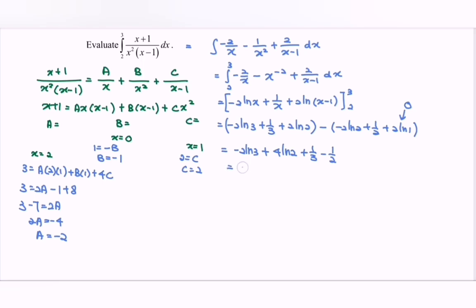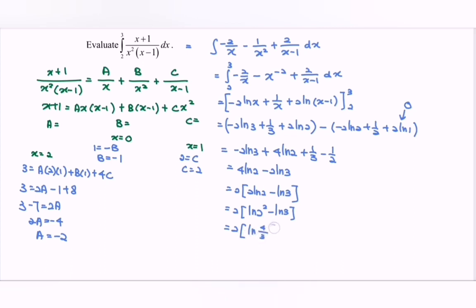Rewriting: 4 ln 2 - 2 ln 3, plus (1/3 - 1/2). Factoring out 2: 2(2 ln 2 - ln 3). Using the law of logarithms: 2(ln 2² - ln 3) = 2 · ln(4/3). Then 1/3 - 1/2 = -1/6. So the final answer is 2 ln(4/3) - 1/6, or approximately 0.409.